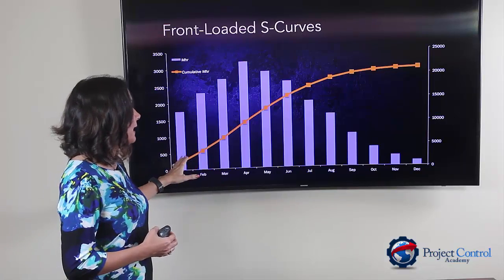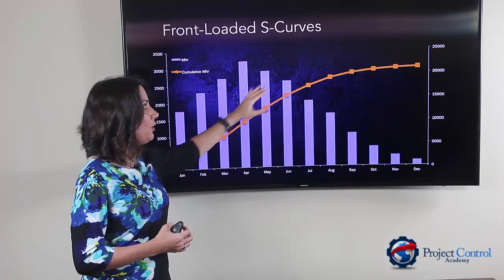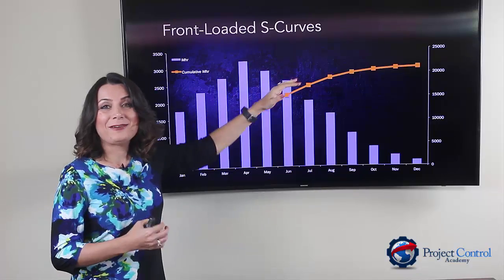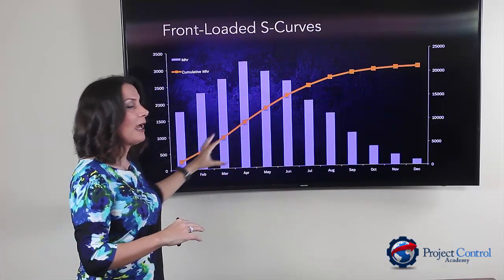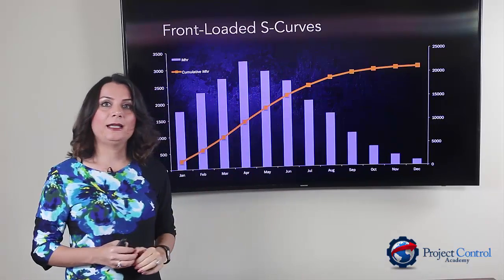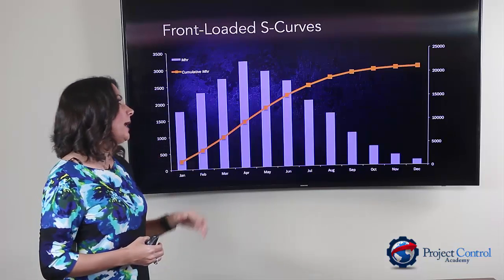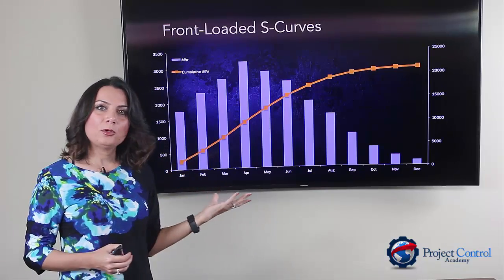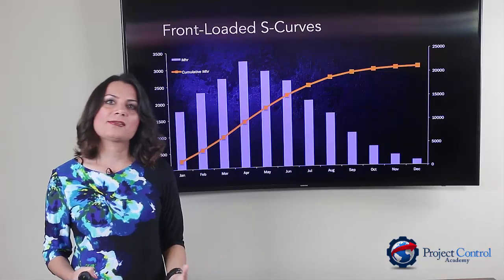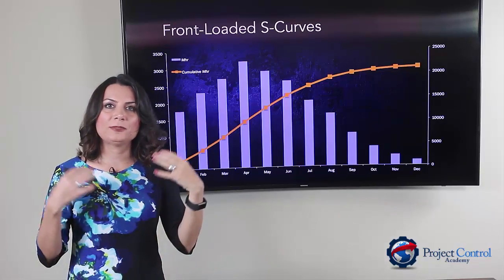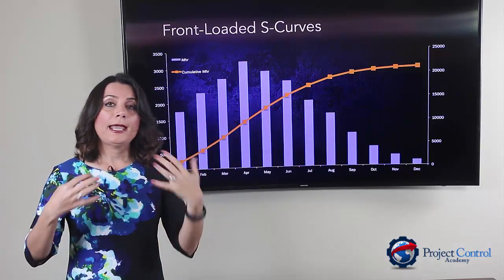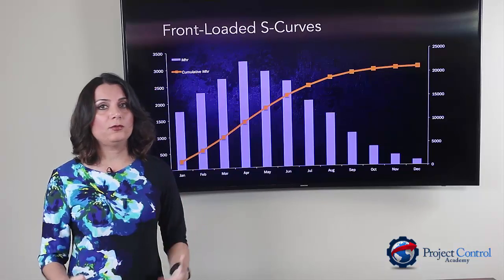You will end up with a curve like a half dome rather than an S-shape, because you have a front-loaded plan in your project. Another example would be repetitive projects — something you have done over and over again, where you don't need much of a learning curve at the beginning.